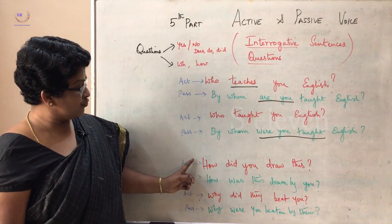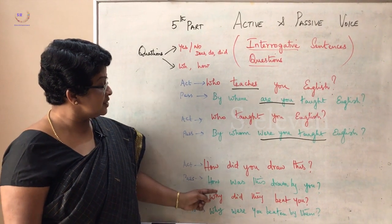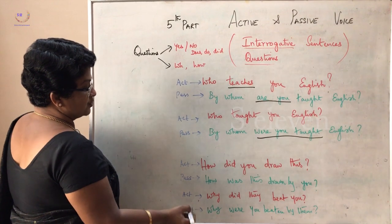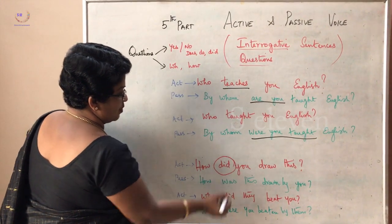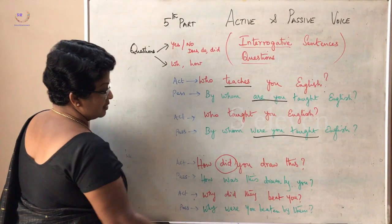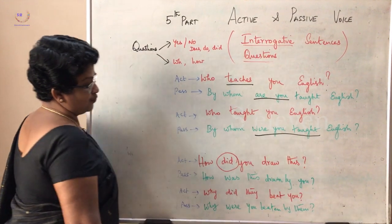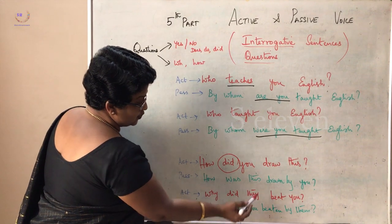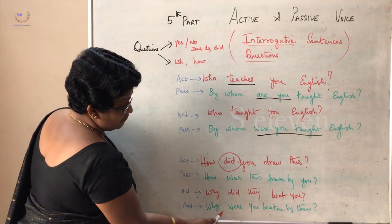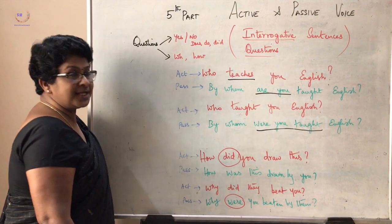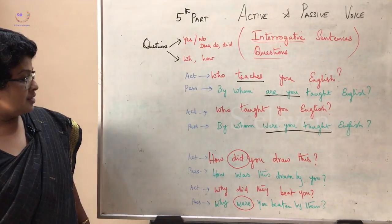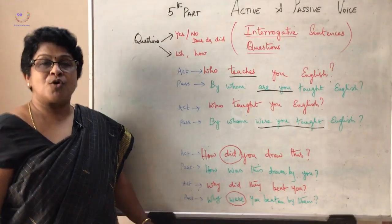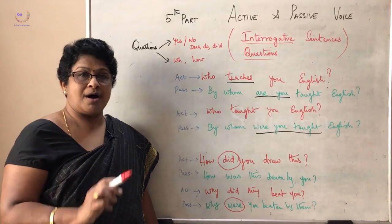Next, we will look at questions starting with how. How did you draw this? The moment you see did, think about using was or were. How was this drawn by you? Next, why did they beat you? Why were you beaten by them? So if you see did, use was or were; and for do or does, use is or are.